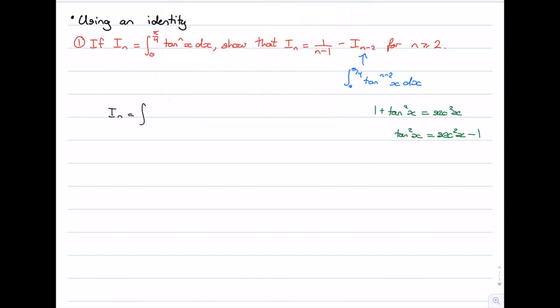Back to our integral: we want to get tan^{n-2} appearing. So instead of tan^n(x) let's write tan^{n-2}(x) times tan²(x) — the power is still n, just written differently. We can now substitute for tan²(x) using our identity, writing sec²(x) - 1 in its place.